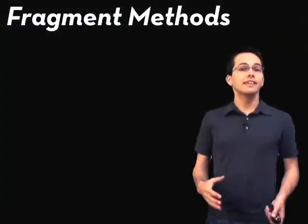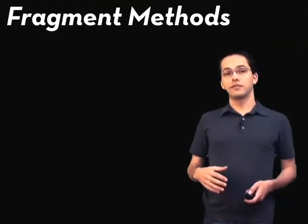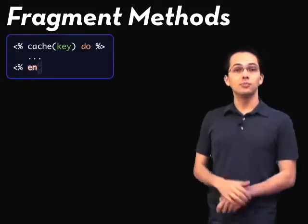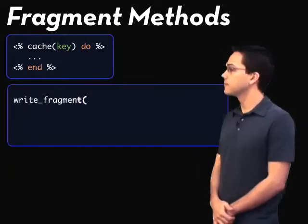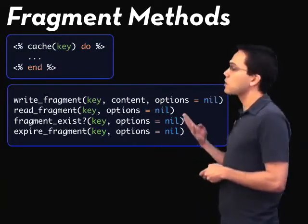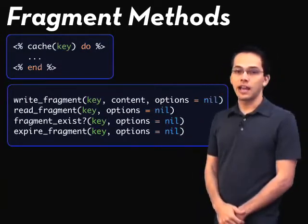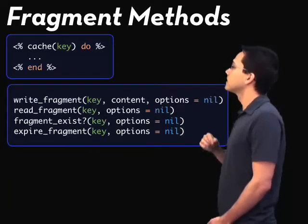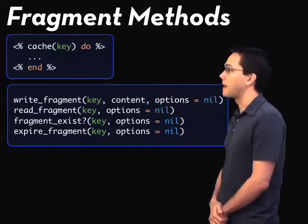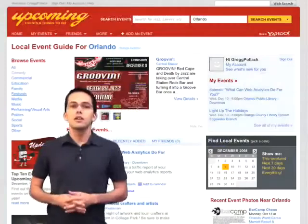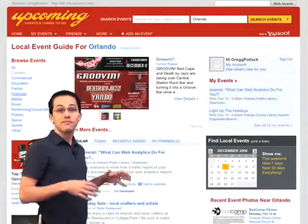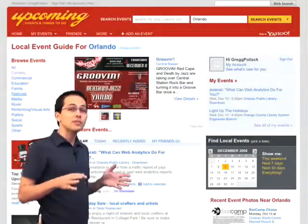We basically have five methods to interact with our view cache. First, we've got the `cache` do-block, which we use in our views. Then at the controller layer, we've got four other methods: `write_fragment`, `read_fragment`, `fragment_exist?`, and `expire_fragment`. Let's take a look back at the upcoming.org web page and figure out how we might use some of these methods.